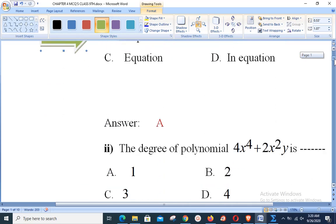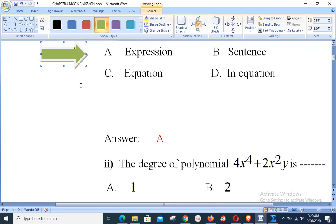Next, the second statement: the degree of polynomial 4x to the power 4 plus 2x to the power 2 y is dash.